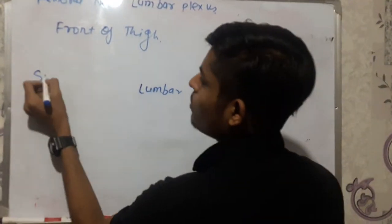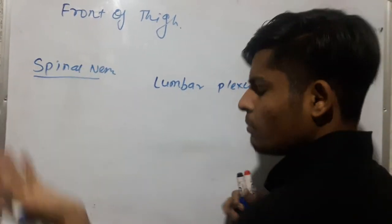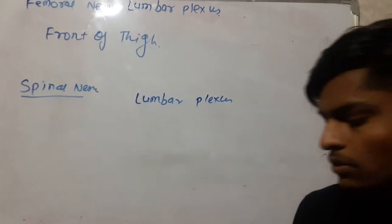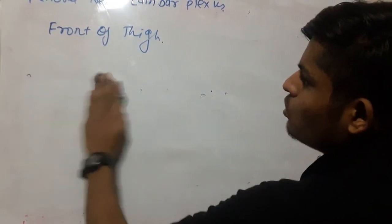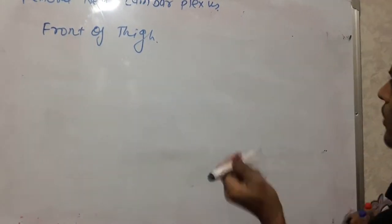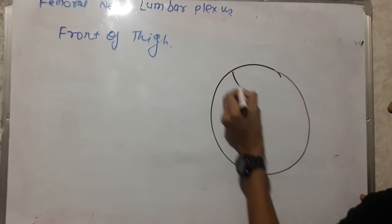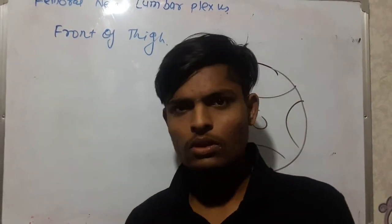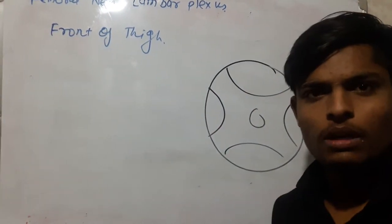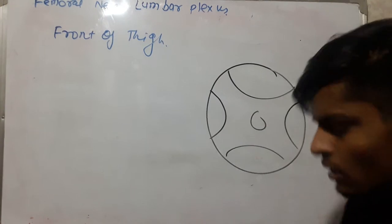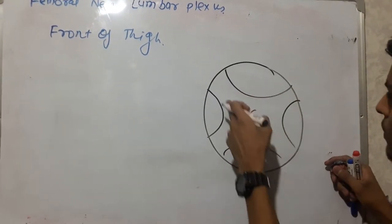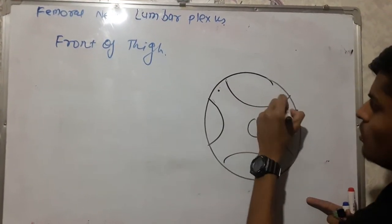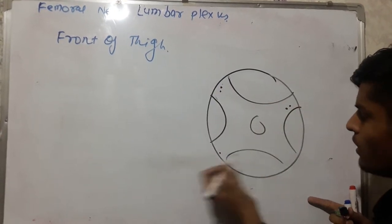Before that, we must know about the concept of the spinal nerve. What is a typical spinal nerve? Each spinal nerve has sensory and motor fibers. It has anterior divisions and posterior divisions. Let's suppose this is a cross-section of the spinal cord — if you cut the spinal cord in any segment, maybe thoracic, lumbar, or cervical, you will see it is surrounded by white matter and in the center we have gray matter. This part is called the dorsal root or sensory root, and this is the ventral root or motor root.